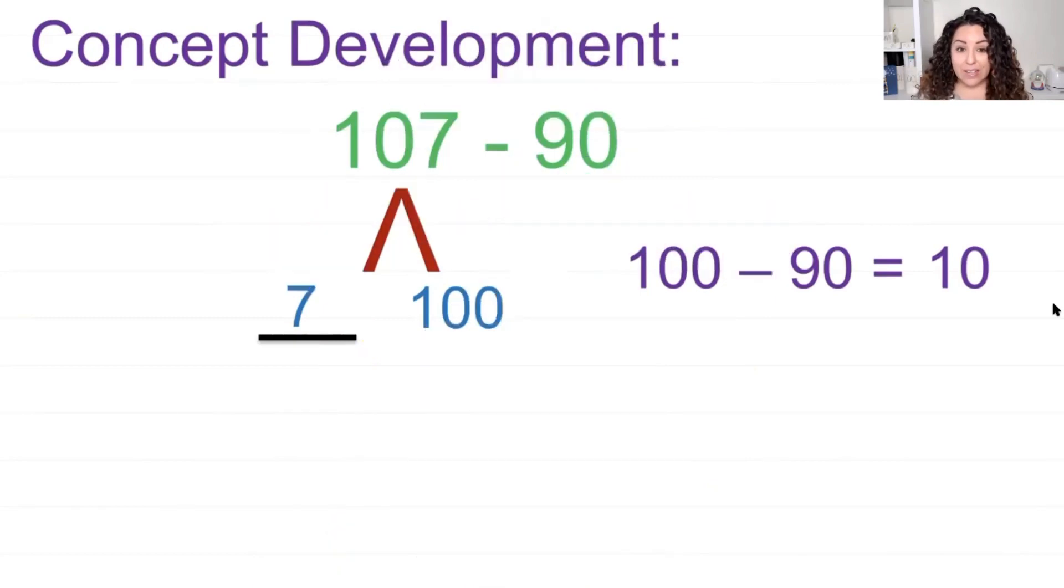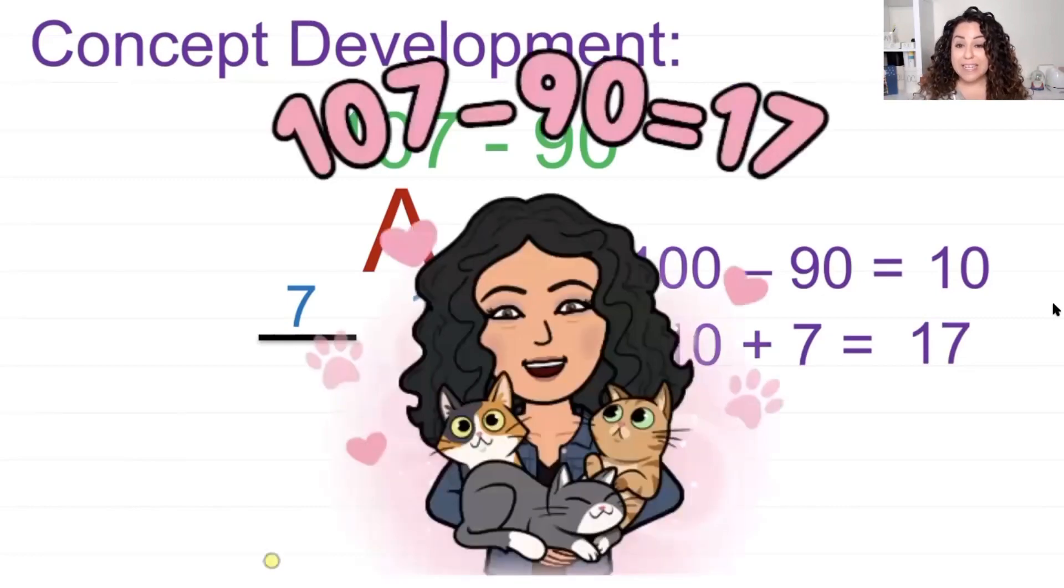No, it doesn't at all. Now take a look at this number right here, number seven. That's an important number. We haven't used it yet. When we break numbers apart, we can't forget about the numbers that we don't use. So since I haven't used the seven, how am I going to use it? Am I going to take it away from 10? No, I'm actually going to add it to 10. The reason why is because it's 107 take away 90. I already took away 90. So this seven, instead of taking it away, I can just add it to what's left. So I'm going to do 10 plus seven. And 10 and seven more is equal to 17. So that means that 107 take away 90 is equal to 17.